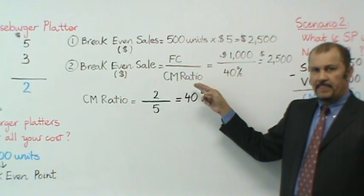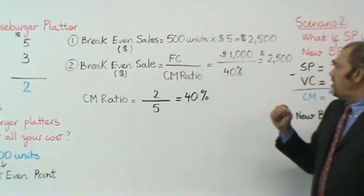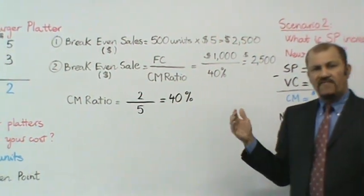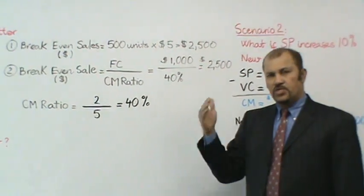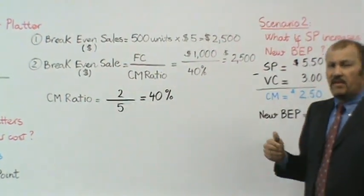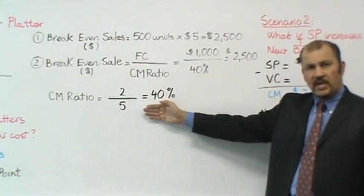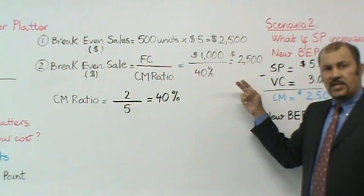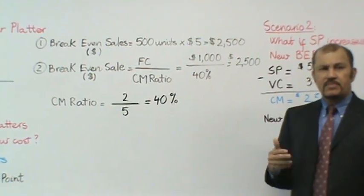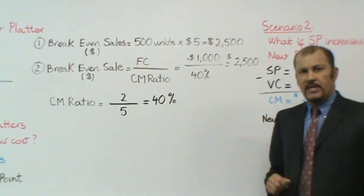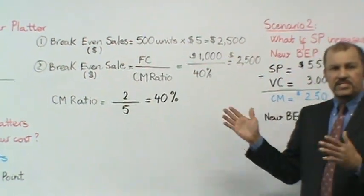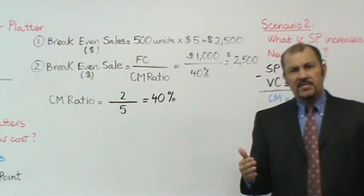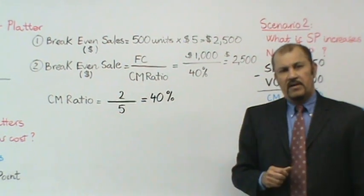A second way would be to take your fixed cost of $1,000 and divide that by a contribution margin ratio of 40%. Now how do we come up with a contribution margin ratio of 40%? We took the $2 contribution margin per unit over your $5 a unit selling price. So 2 over 5 as a percentage would have been 40%. And that calculation is given to you right here. So when you go through the second method, you end up with the same result, which is $2,500 in your break-even sales.